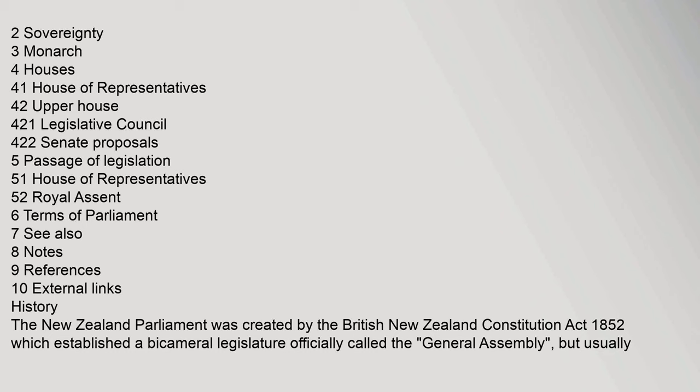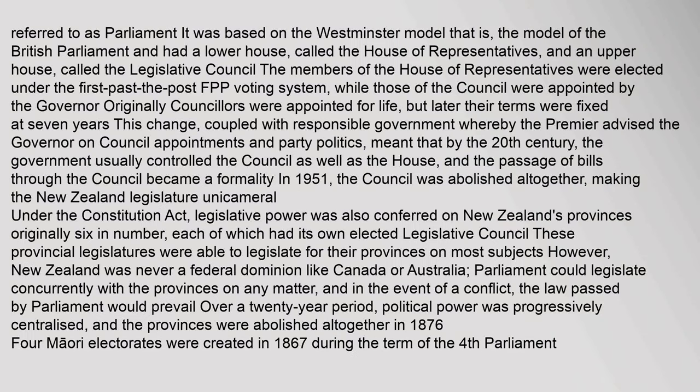History: The New Zealand Parliament was created by the British New Zealand Constitution Act 1852, which established a bicameral legislature officially called the General Assembly, but usually referred to as Parliament. It was based on the Westminster model, that is, the model of the British Parliament, and had a lower house called the House of Representatives and an upper house called the Legislative Council. The members of the House of Representatives were elected under the first-past-the-post (FPP) voting system, while those of the council were appointed by the governor.